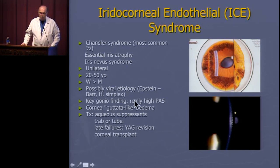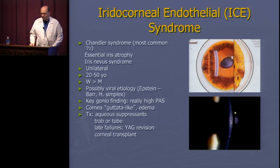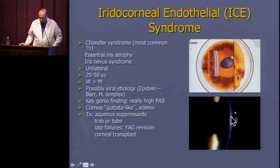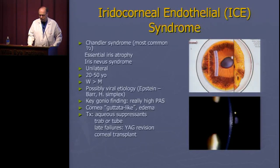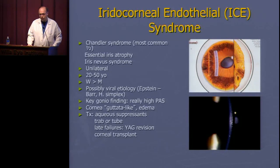Gonioscopically, you'll see very high peripheral anterior synechiae with the other eye completely open — so high that you'd think of inflammation, but with no inflammatory signs, you think ICE syndrome. The cornea shows fine guttata-like changes; specular microscopy reveals pleomorphism and lower cell count. Treatment uses aqueous suppressants followed by incisional surgery — trabeculectomy or tube shunts. Laser iridotomy and laser trabeculoplasty have no role here, as it's not pupillary block and the angle is membrane-covered.